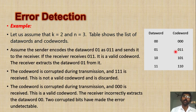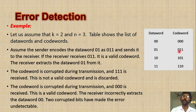Now, if during transmission, the codeword 0,1,1 becomes 1,1,1 — the first bit is changed from 0 to 1 — when the receiver gets 1,1,1 as the codeword, it checks in the list. It is an invalid codeword; 1,1,1 is an invalid codeword. So the checker understands that it is corrupted.